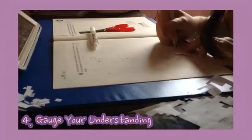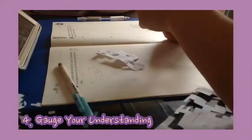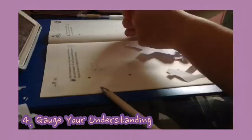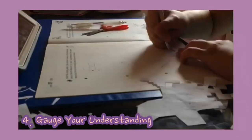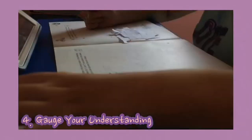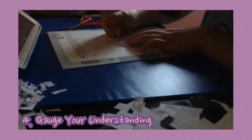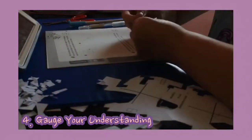My fourth tip for you guys is to gauge your understanding. Make a list of what topics are included in your finals. Then, beside each topic, use symbols like dots or stars to gauge how much you understand your lesson.